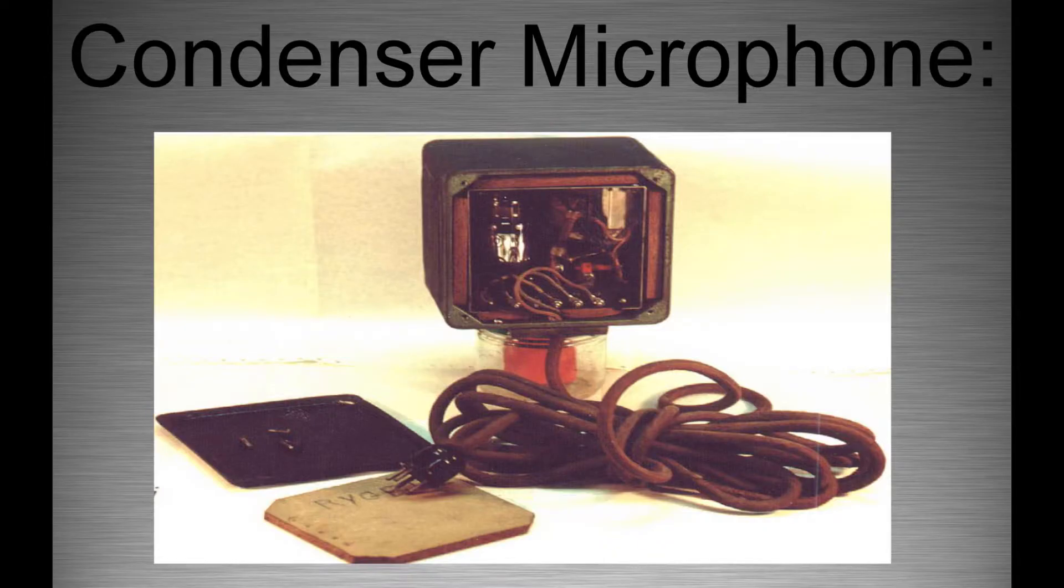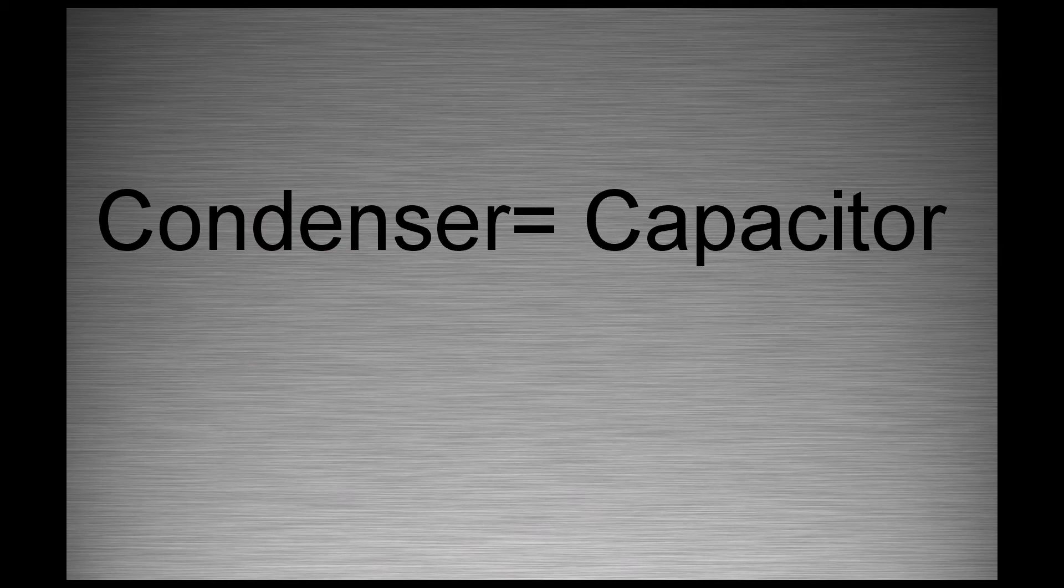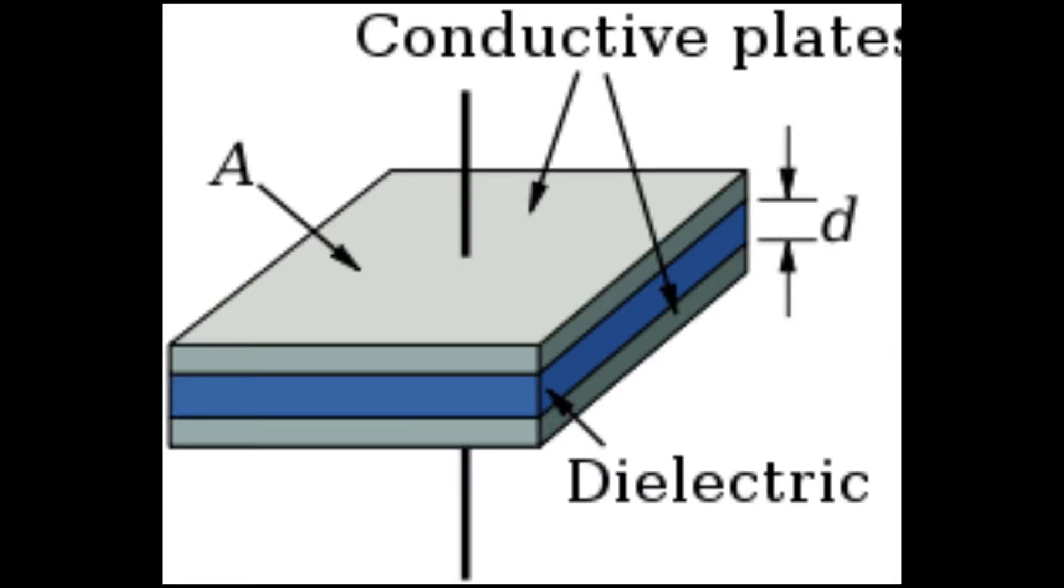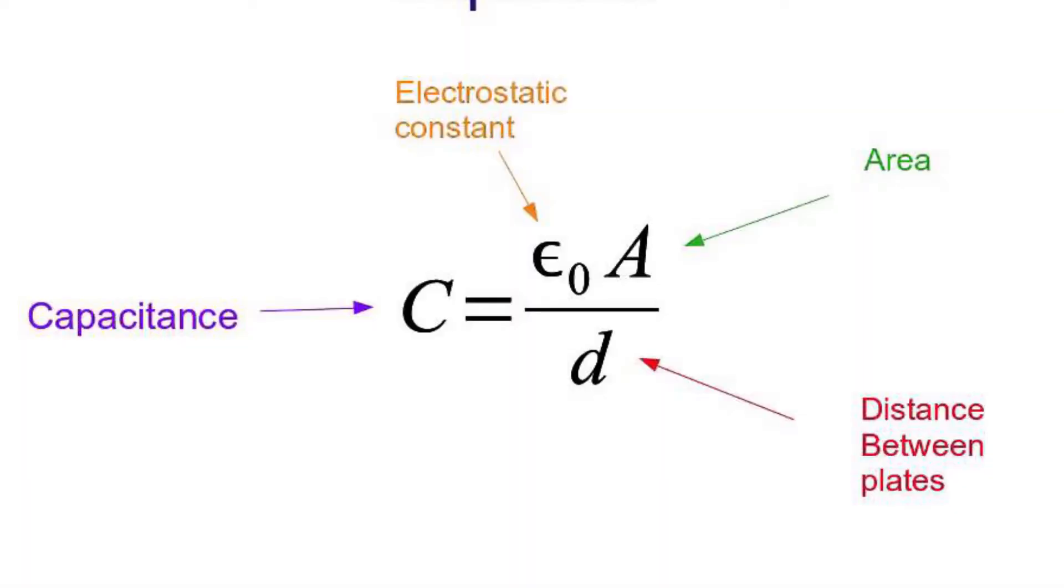Condenser microphone. The term condenser is also used to refer to capacitors. A capacitor is just two metal plates separated by an insulator. So, the equation for capacitance looks like this, where the distance between the plates is inversely proportional to the capacitance.